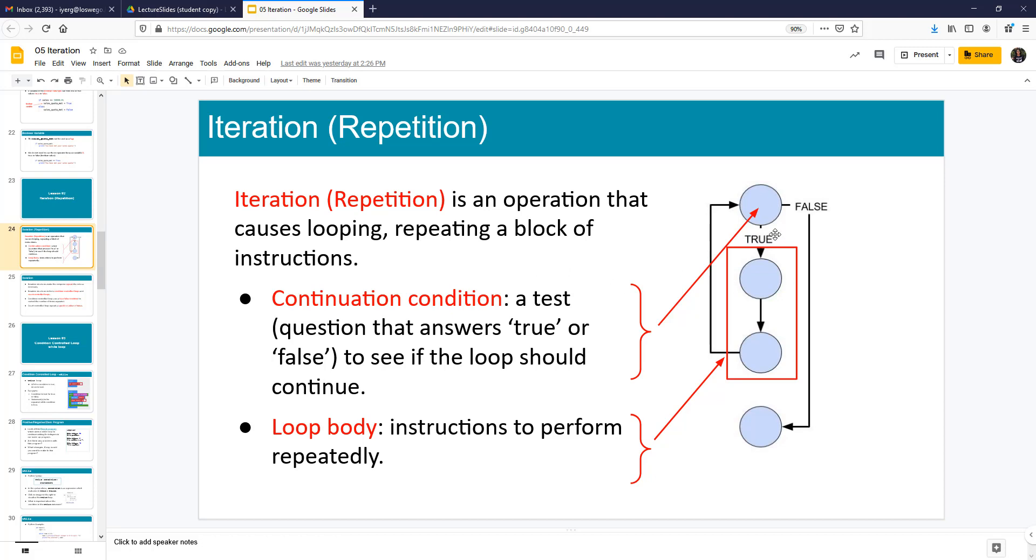So here is a block of code. Here is our condition to test. If it is true, do something, go back and check. So the syntax knows to go and check. That is the key.